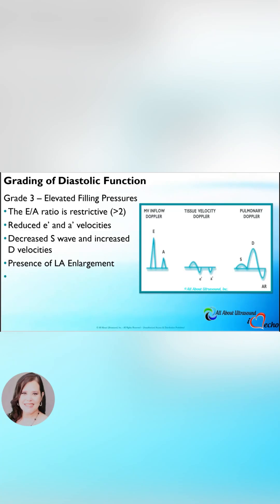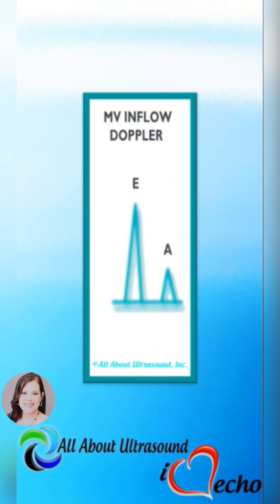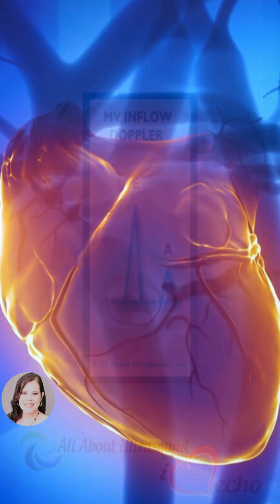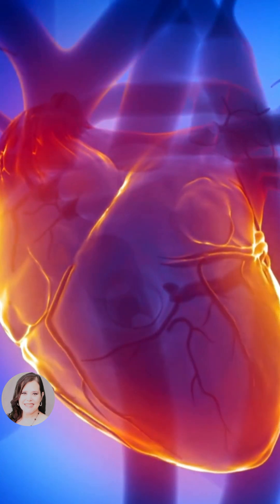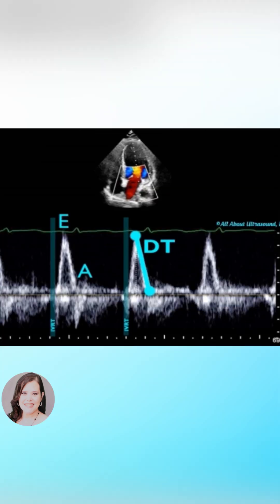Grade 3 diastolic dysfunction will show elevated filling pressures. The mitral valve inflow — the E and A — will be in a restrictive pattern. Filling pressures are high and blood flow into the ventricle will start early, then filling will terminate quickly. You'll also have a shortened isovolumic relaxation time and a decreased deceleration time.